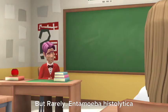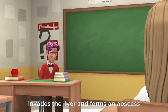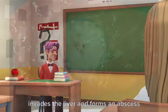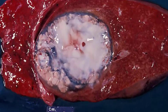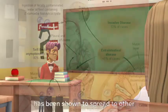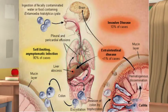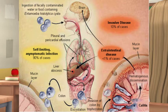But rarely, Entamoeba histolytica invades the liver and forms an abscess. In a small number of instances, it has been shown to spread to other parts of the body, such as the lungs or brain, but this is very uncommon.